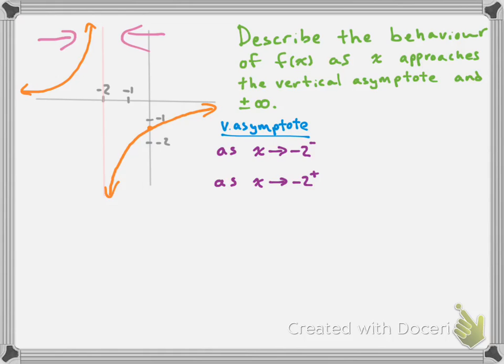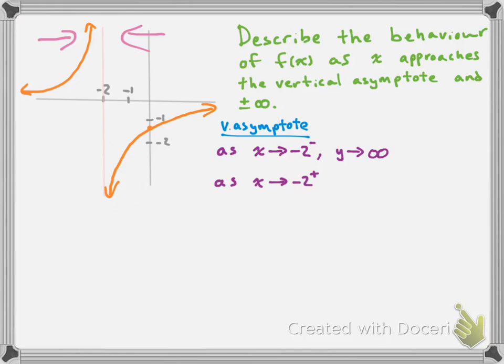As x approaches -2 from the left, the function goes up and up — the y-value approaches positive infinity. So as x → -2⁻, y → +∞. As x approaches -2 from the right, the function is going down towards negative infinity. So as x → -2⁺, y → -∞.